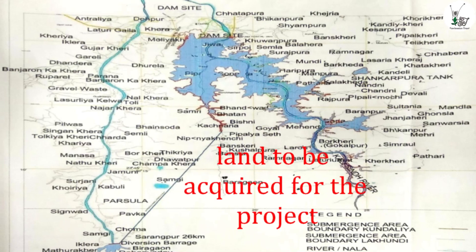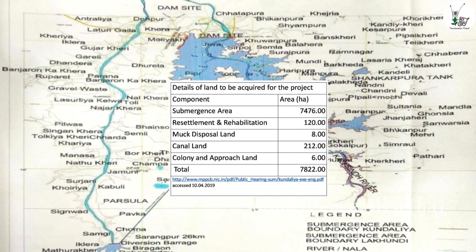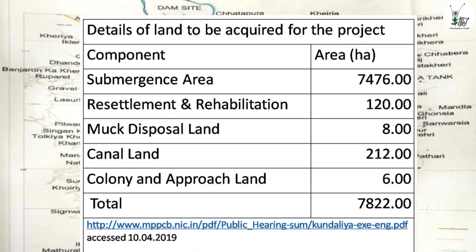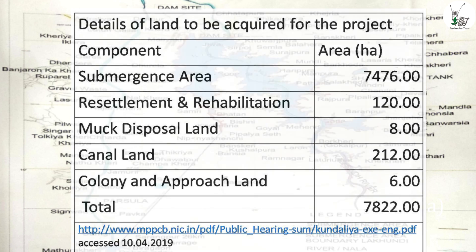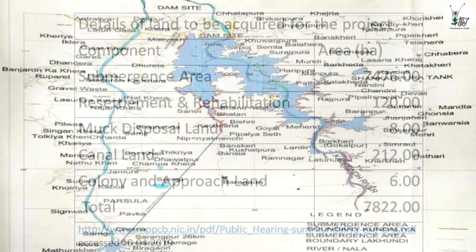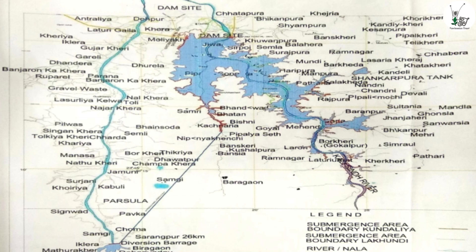Looking at the kind of impacts, the project has close to about 74 square kilometers — 7,476 hectares — of submergence area. If we consider the entire requirement including where muck will be disposed, the canal areas, approach land, and colonies, it comes to close to about 8,000 hectares, which is about 80 square kilometers of area.